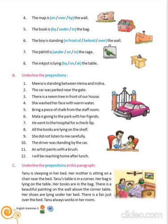Continuing exercise B: 'from' is the preposition, then 'with', then 'for'. In the next sentence, 'on' is the preposition. Then 'to' is the preposition, followed by 'by', and then 'with' is the preposition.